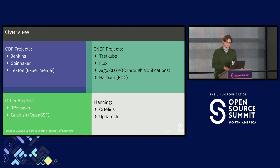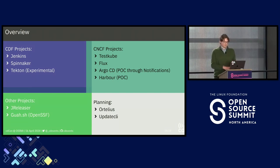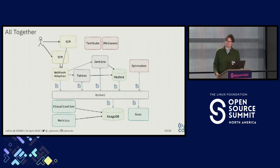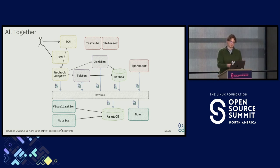Other projects that have implemented CDEvents are JReleaser, a Java release tool; guac.sh, which is an OpenSSF project; and we are having conversations with the Ortelius community and the Argo CD CLI tool. We are also building a webhook adapter as part of our community, which allows translating different events from different SCMs — GitHub, GitLab, Gitea, and so forth — into a common language, so you can use them to trigger Tekton, Jenkins, or any build tool pipelines.